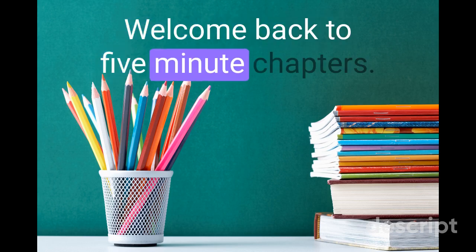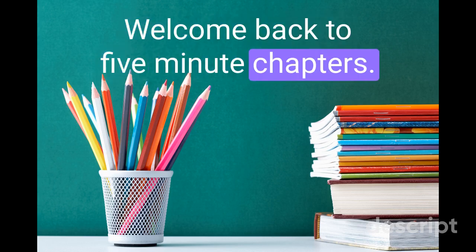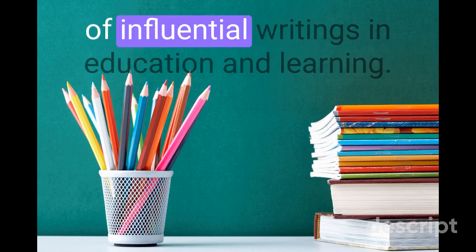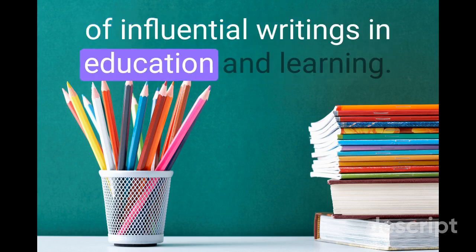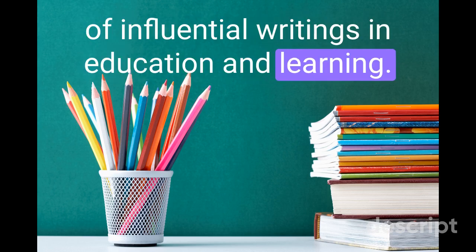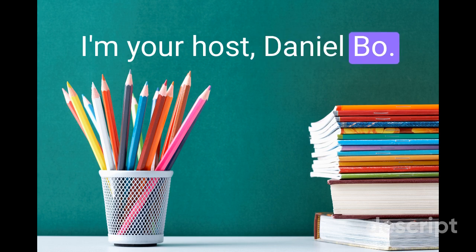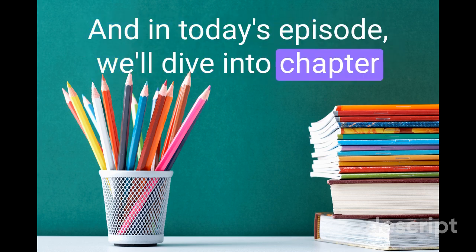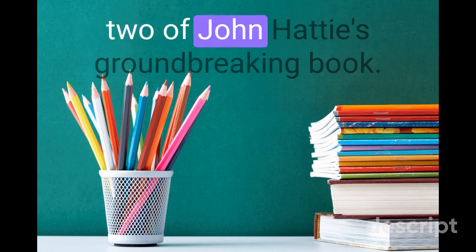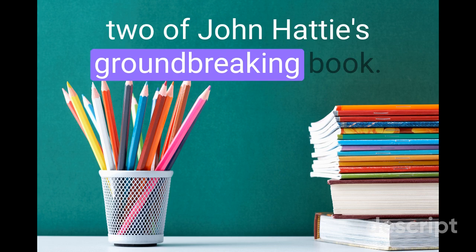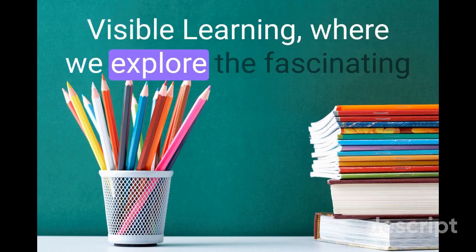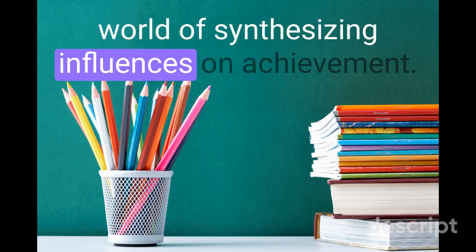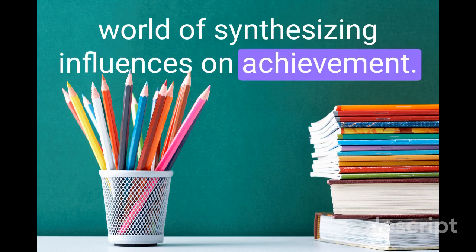Welcome back to 5-Minute Chapters, the podcast that brings you concise summaries of influential writings in education and learning. I'm your host, Daniel Bowe, and in today's episode we'll dive into Chapter 2 of John Hattie's groundbreaking book, Visible Learning, where we explore the fascinating world of synthesizing influences on achievement.